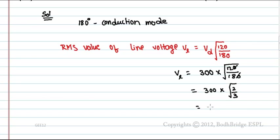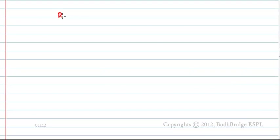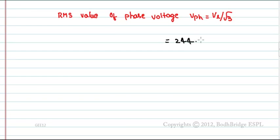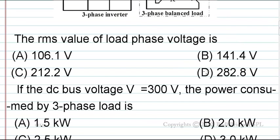This equals 244.948 volts. The RMS value of load phase voltage V phase equals Vl by root 3. This equals 244.948 divided by root 3, which equals 141.42 volts. So the RMS value of load phase voltage is option B, 141.4 volts.